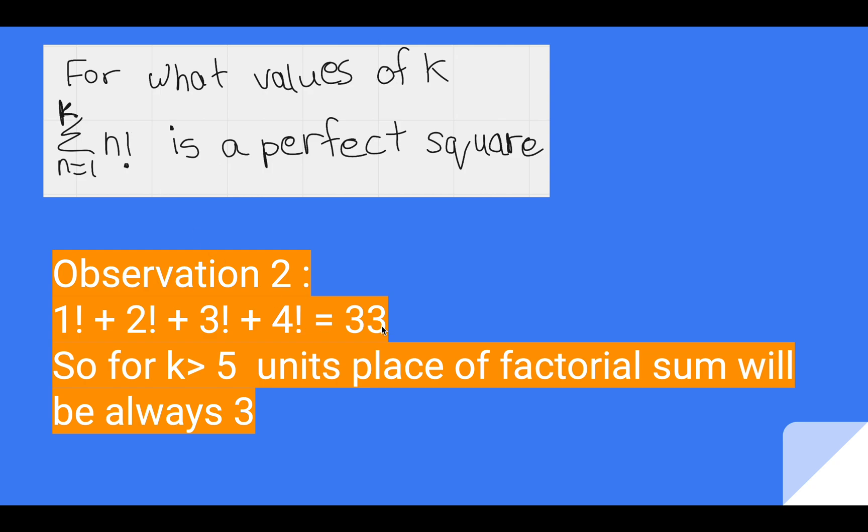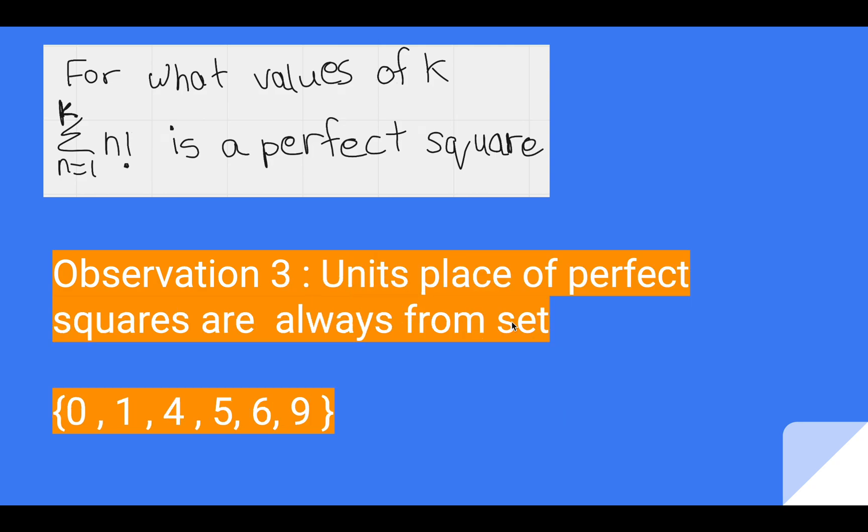And now comes the picture which leads it to perfect square. A perfect square has very specific unit places: 0, 1, 4, 5, 6, and 9. Numbers like 2, numbers ending at 2, 3, 7, and 8 cannot be perfect squares.